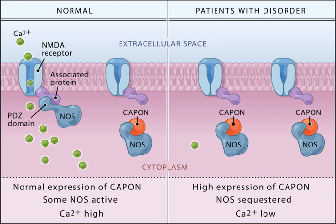Gasotransmitters include nitric oxide (NO), carbon monoxide (CO), and hydrogen sulfide (H₂S). Monoamines include dopamine (DA), norepinephrine (noradrenaline, NA), epinephrine (adrenaline), histamine, and serotonin (5-HT). Trace amines include phenethylamine, N-methylphenethylamine, tyramine, 3-iodothyronamine, octopamine, tryptamine, and others.